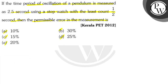And option E, 20 percent. Let's see — we have given T value as 2.5 seconds. We have given using a stopwatch with a least count, meaning the error delta T is 1 by 2, which means 0.5 seconds.